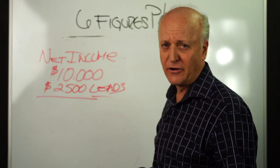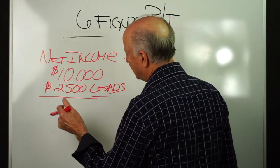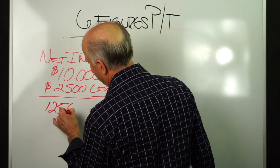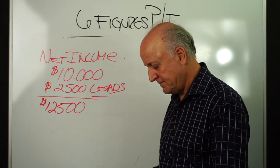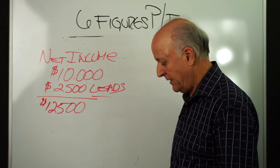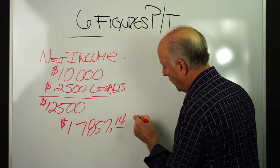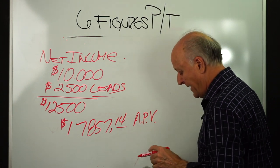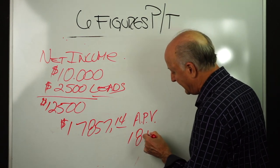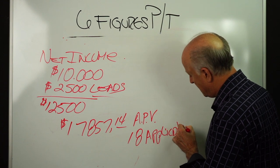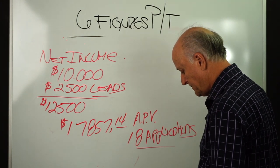Start out with the older leads. Don't spend $3,000 a month until you get very good at converting the lead into an appointment, which means objection handling. But let's take this at $12,500, which is my total income I need. We're going to take that and divide it by our contract rate. That means we need to write $17,857.14 per month in APV, and if the average application is $1,000, that means we need to write 18 applications per month, or five a week.